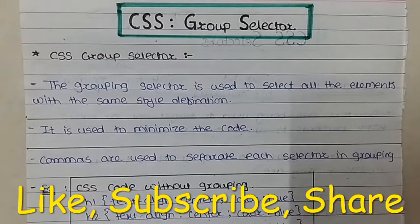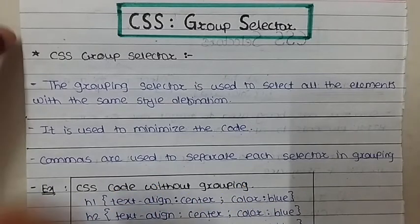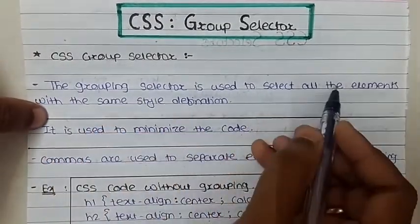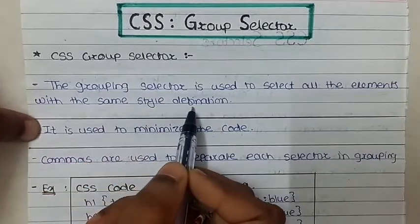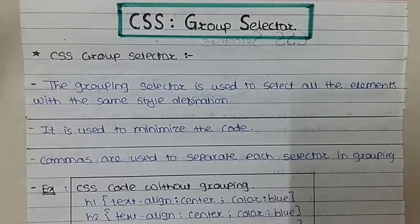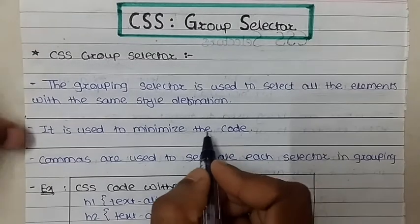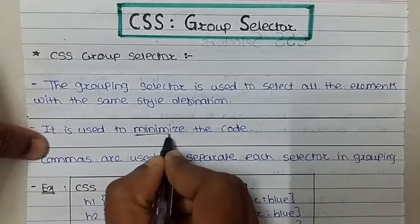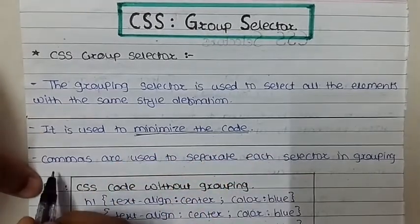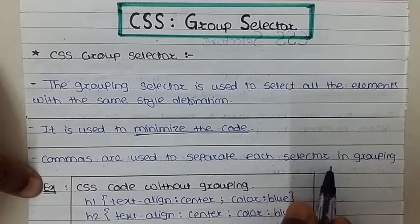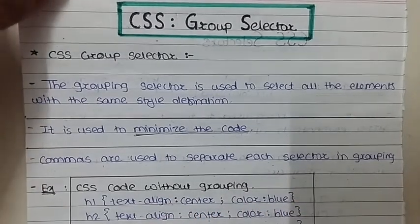What is meant by the group selector? The grouping selector is used to select all the elements with the same style definition. That means you want to select all the elements which share the same styling information common to all those elements. It is used to minimize the code. Commas are used to separate each selector in grouping.